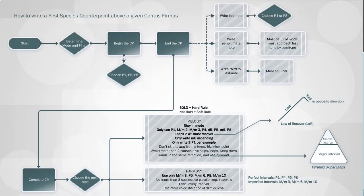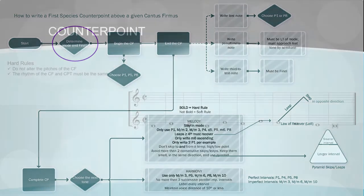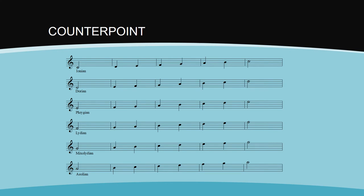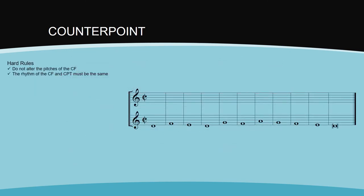The first step on our flowchart is to determine the mode and the final. Look at the first and last tones of the cantus firmus. They are both D. D is the final of the mode. There are no accidentals, which could lead us in the direction of a transposed mode. If we look at the most common modes, we see that the mode with the final of D is the Dorian mode. Another hard rule of counterpoint is to only use the pitches of the current mode.